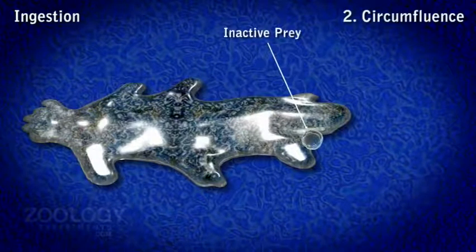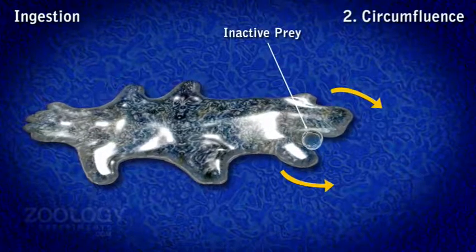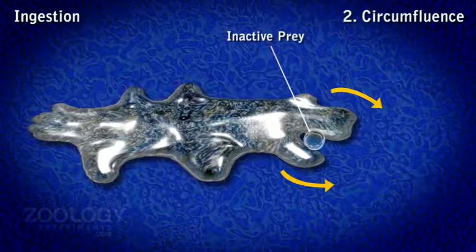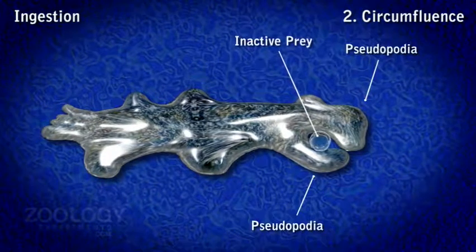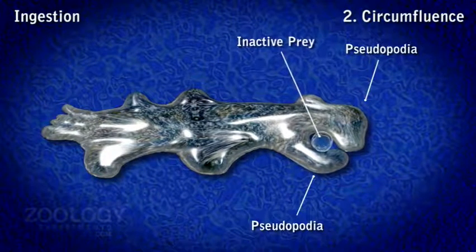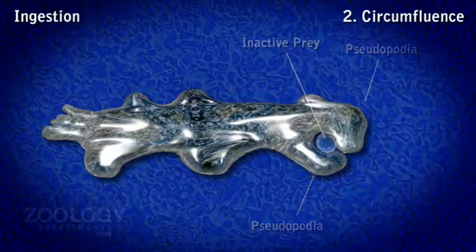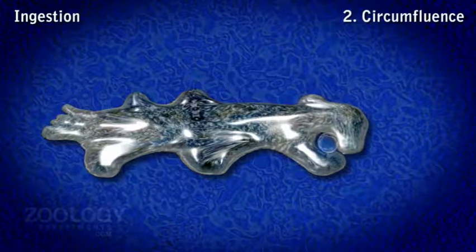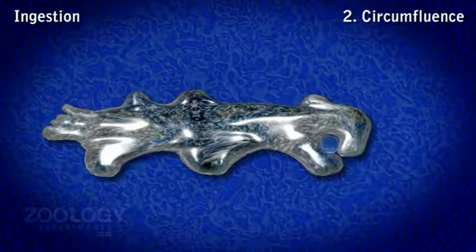2. Circumfluence: When amoeba comes in contact with a less active organism like bacteria, it extends its pseudopodia around the organism and envelopes it completely in a food vacuole within the cytoplasm. The enveloping pseudopodia always maintains intimate contact with the surface of the prey.